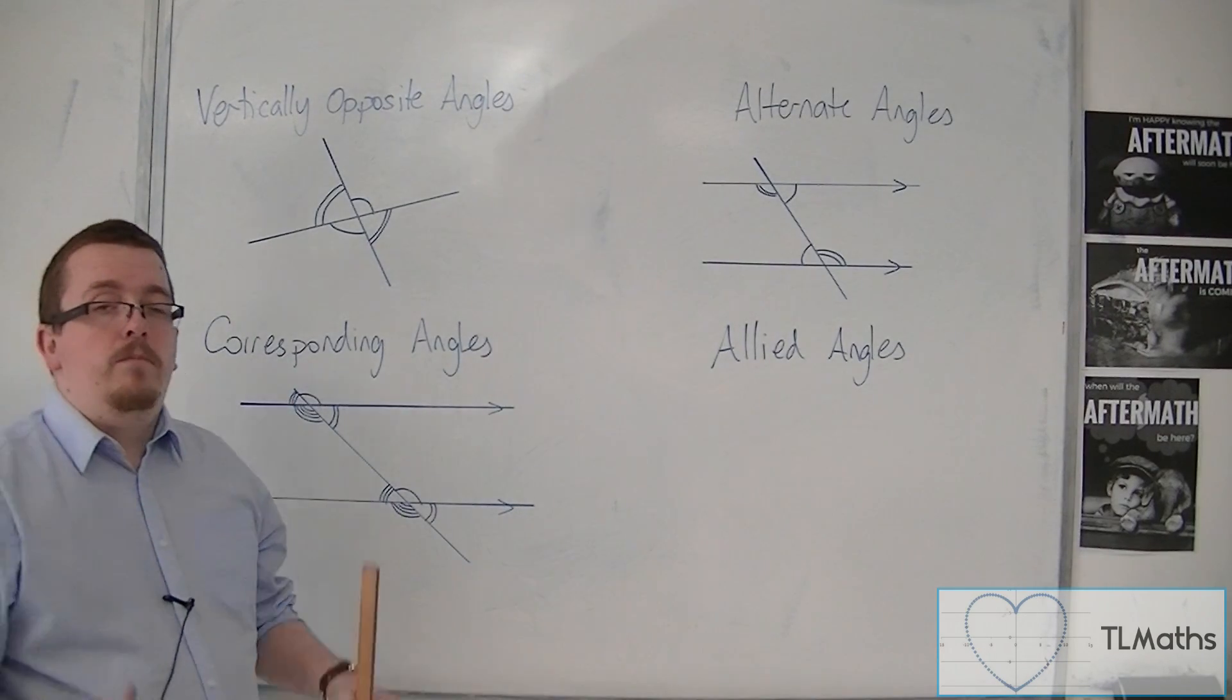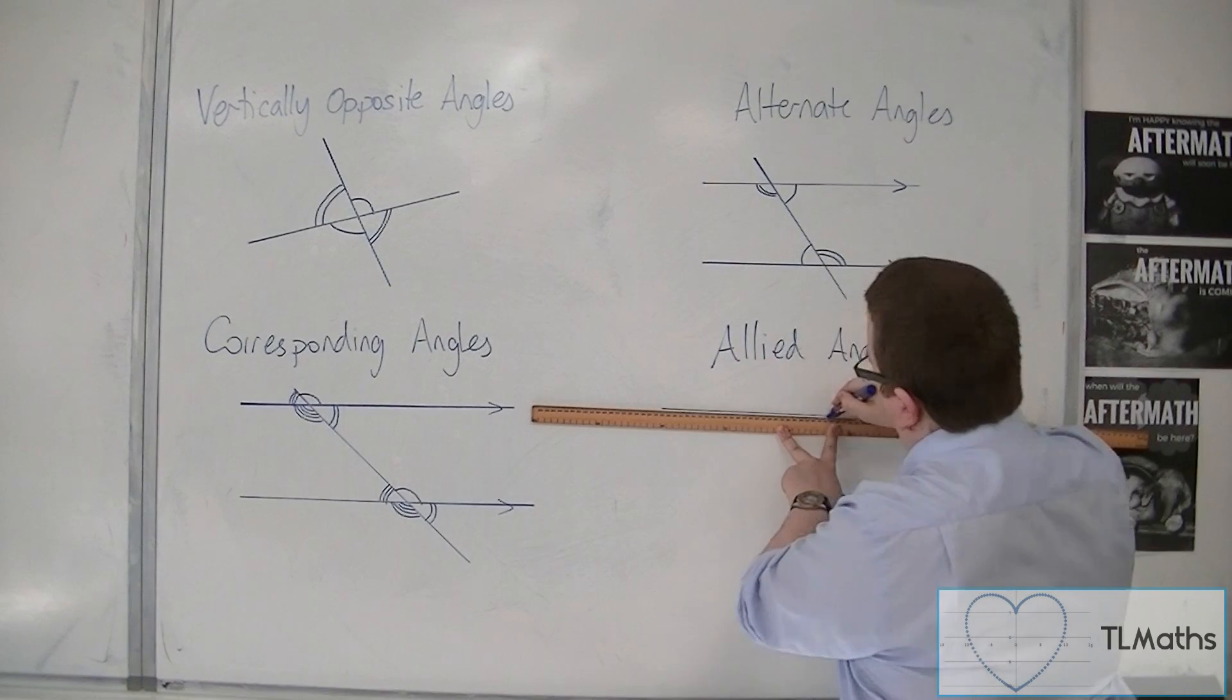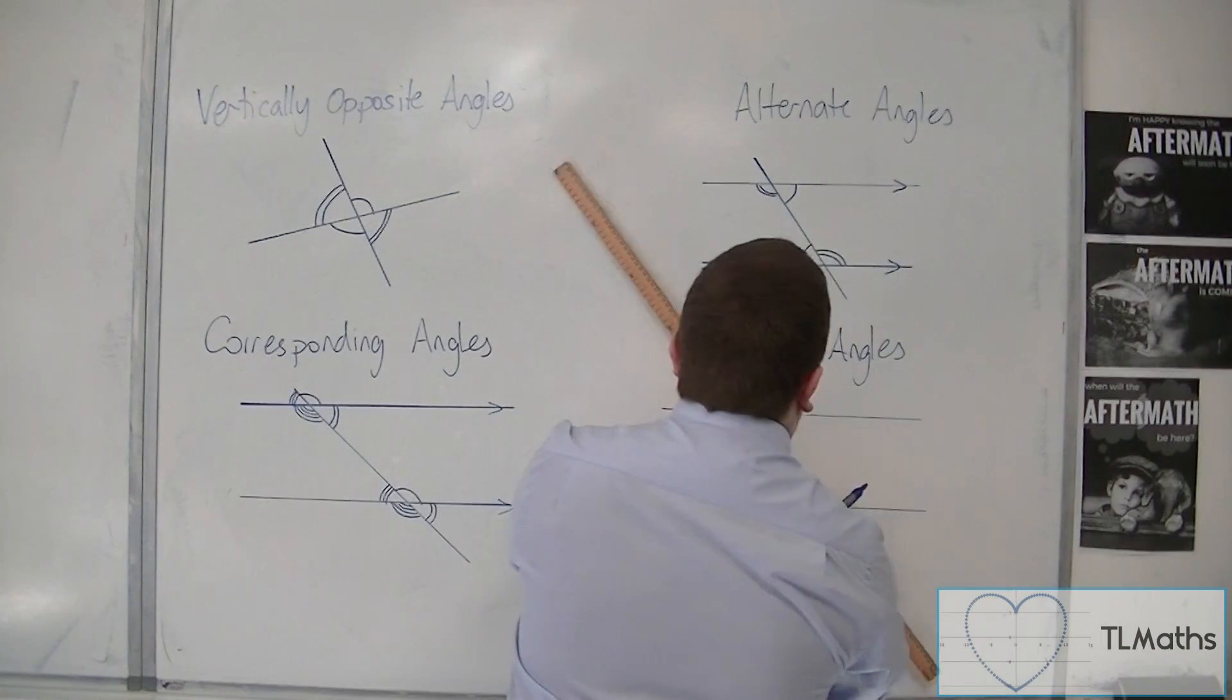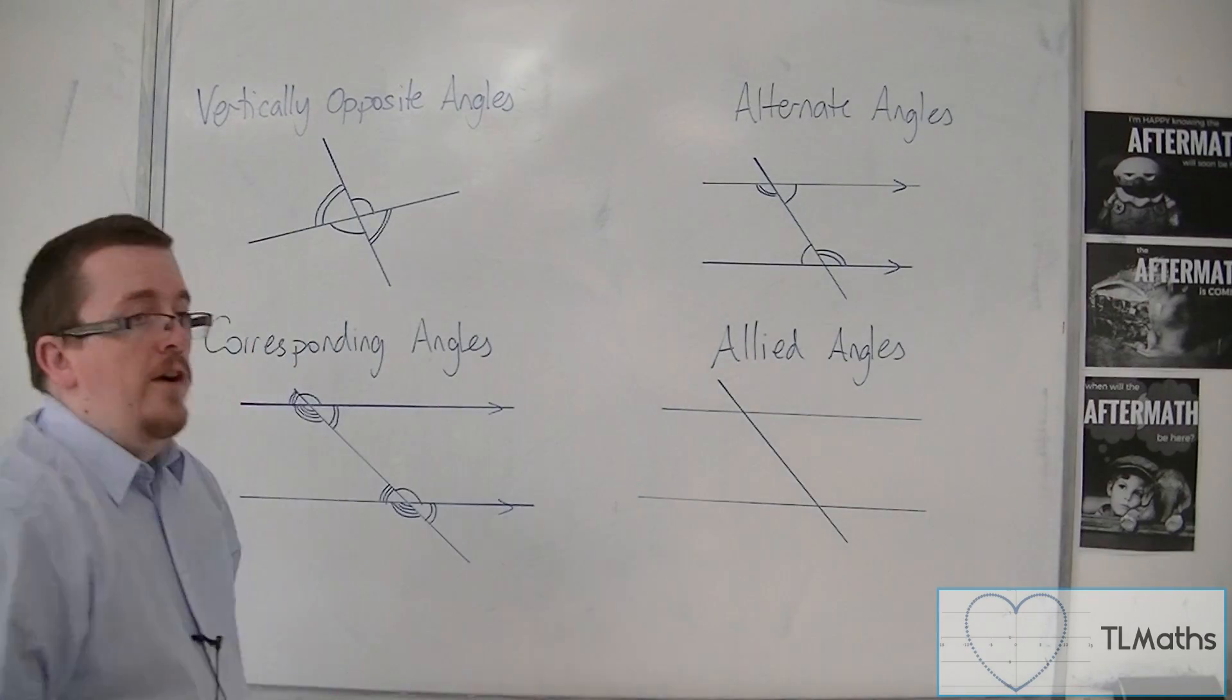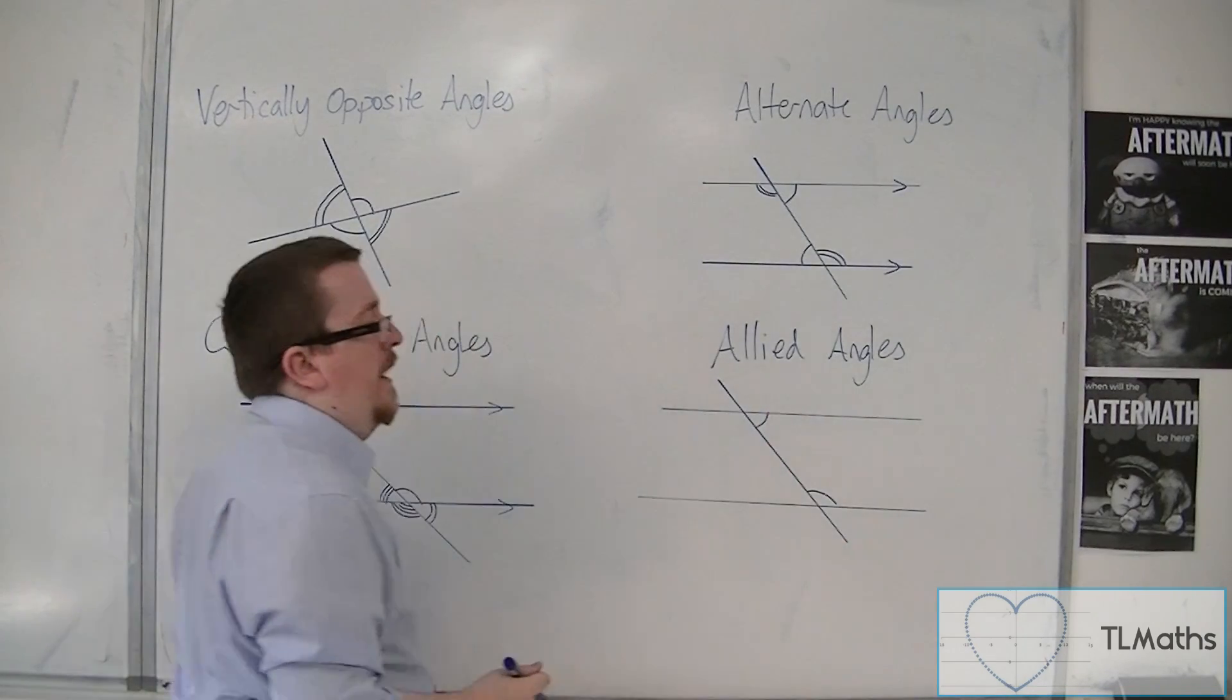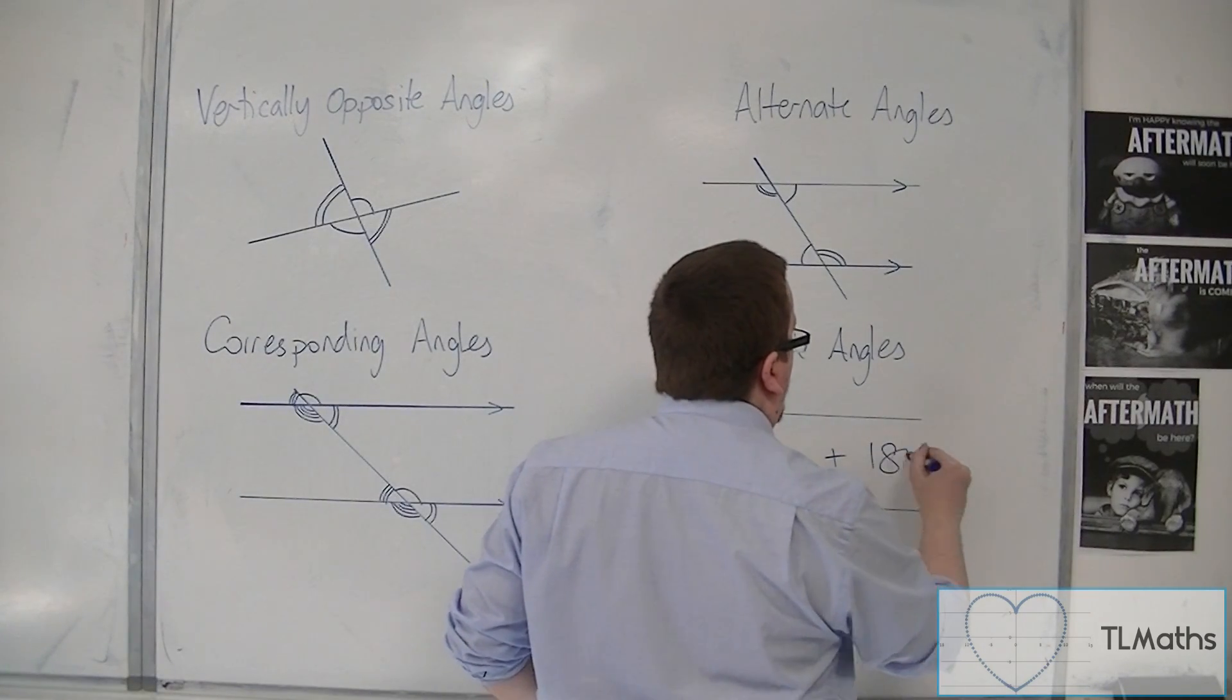Now, allied angles seems to be, tends to be one that is often forgotten, and may or may not have been taught to you as allied angles. But they're a very useful thing to remember. So allied angles, allied makes sense that they're on the same side. They're both between the parallel lines, and they're on the same side.